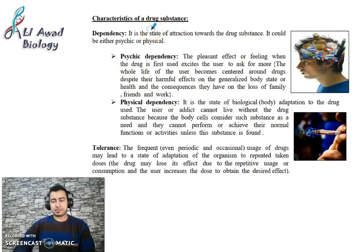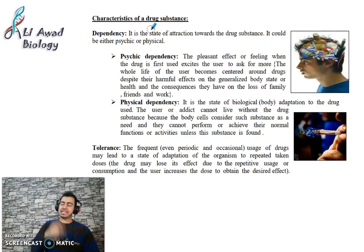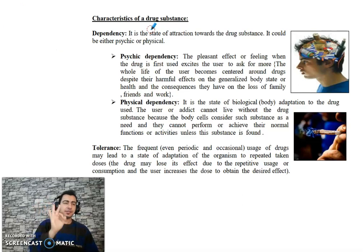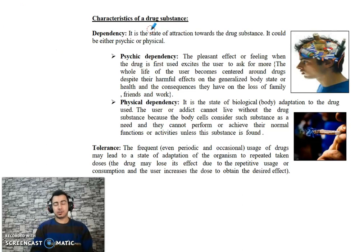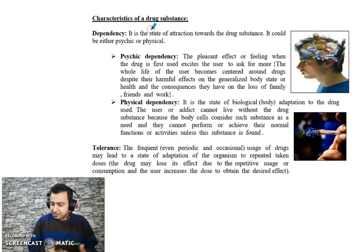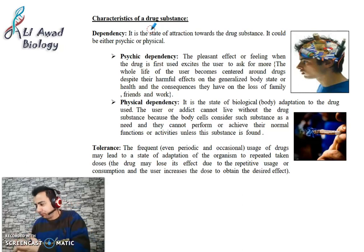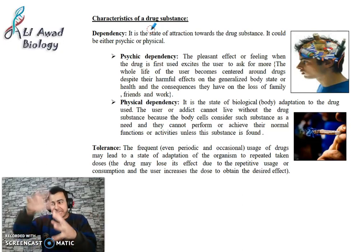Now, characteristics of a drug substance: any substance that has one or more of these characteristics is called a drug. The first characteristic is dependency (الاعتماد). Just as you depend on your father or brother for your allowance — if they don't give you money, you can't spend or live — in the same way, you become dependent on the drug throughout your life. It's a state of attraction toward the drug substance; it could be psychic or physical.